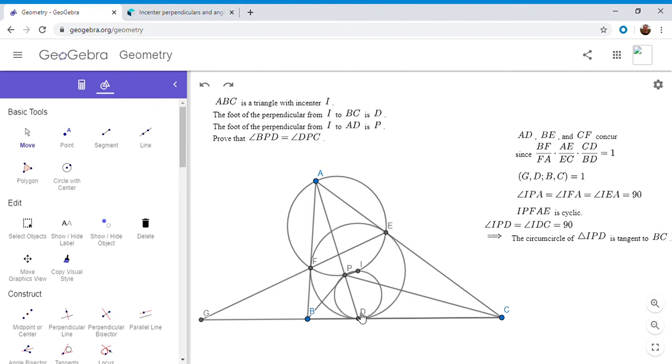So I'm going to write that out. So angle IPD is angle IDC, and they're both 90 degrees. So the circumcircle of IPD has to be tangent to BC. Okay, so basically both the incircle is tangent to BC, and the circumcircle of IPD is tangent to BC. So if they're both tangent at point D, then their radical axis has to be the side BC.